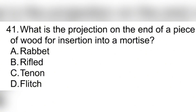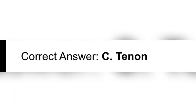Question 41. What is the projection on the end of a piece of wood for insertion into a mortise? A. Rabbit. B. Rifled. C. Tenon. D. Flitch. Correct answer: C. Tenon.